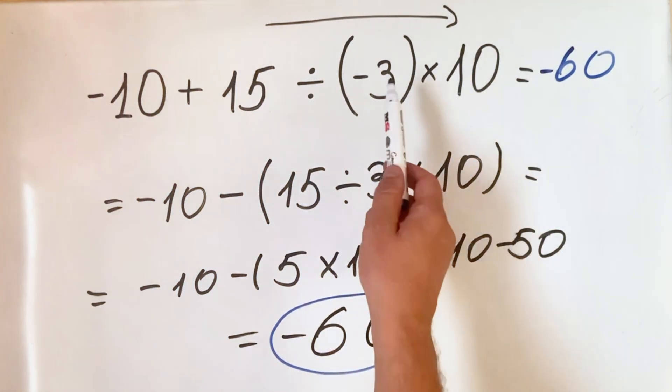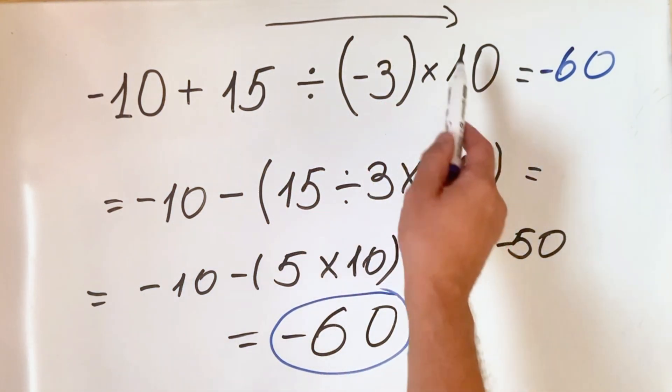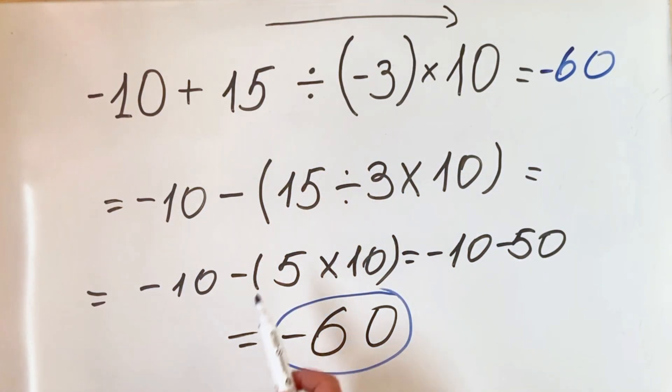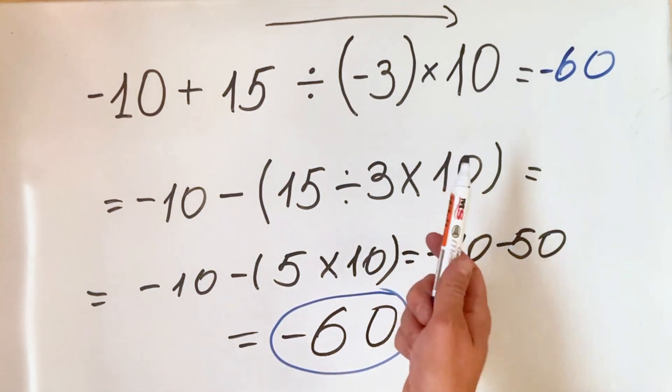If you have a negative sign within, let's say, the multiplication-addition part of the equation, you can always put it in front and use the brackets to make it easier to calculate, or you can do it directly if that's easier for you.